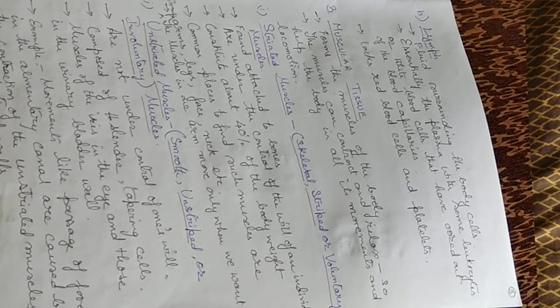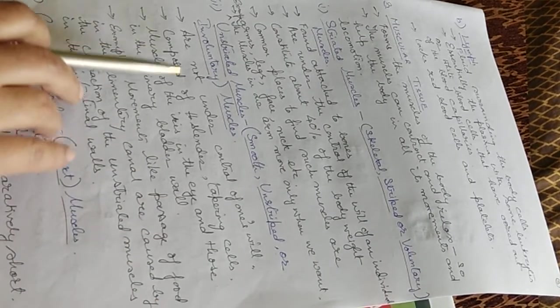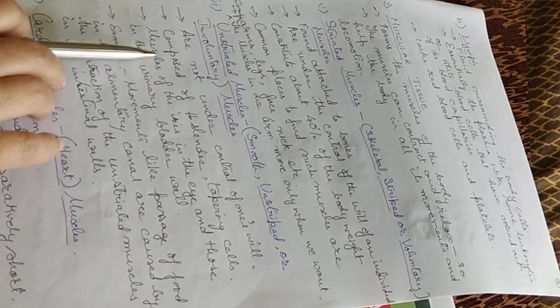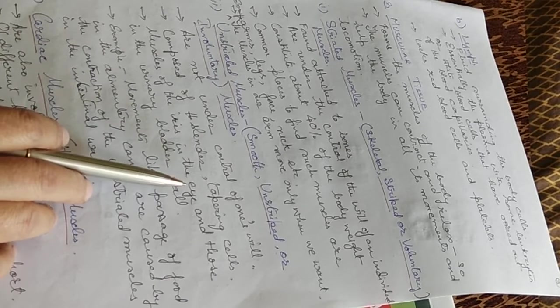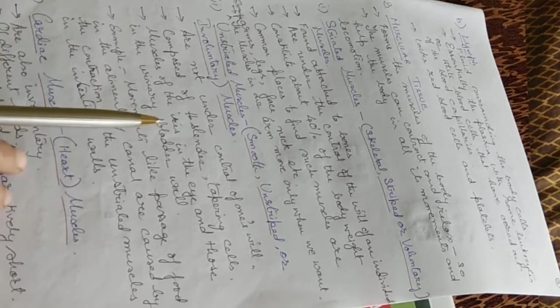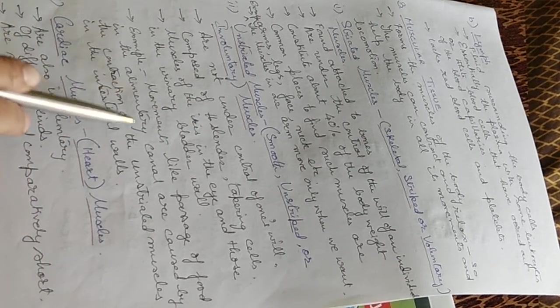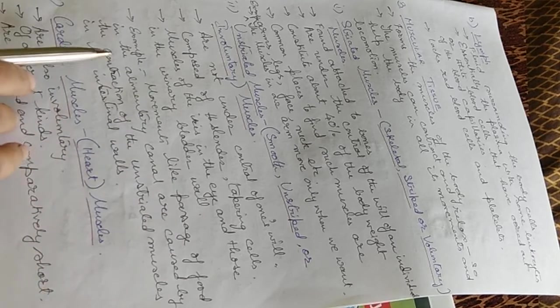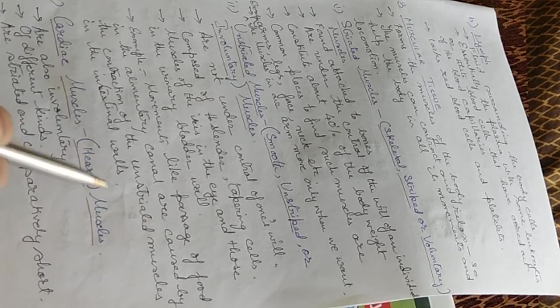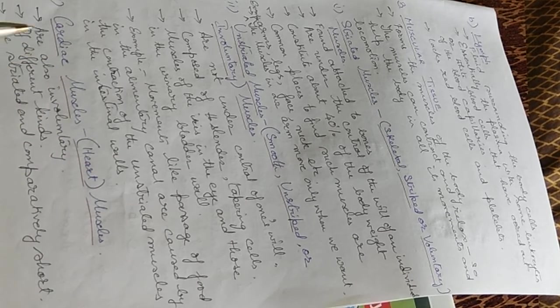Unstriated muscles are smooth, unstriated, and involuntary. They are not under our control. They are composed of slender, tapering cells. Muscles of the iris in the eye and those in the urinary bladder wall are unstriated muscles. For example, movements like passage of food in the alimentary canal are caused by the contraction of the unstriated muscles in the intestinal walls.